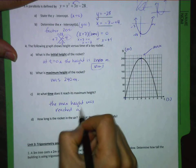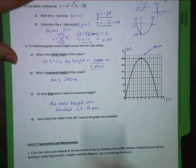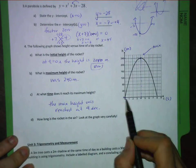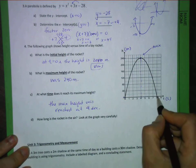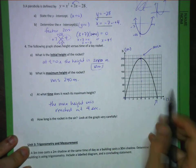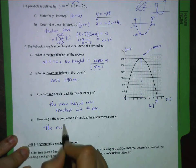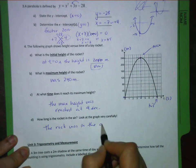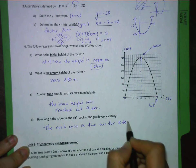How long was the rocket in the air? Look at the graph carefully. Well, this is where it started and this is where it ended. So it was in the air for eight seconds. That's where it hit the ground. So the rocket was in the air for eight seconds.